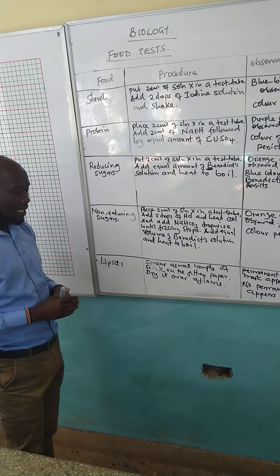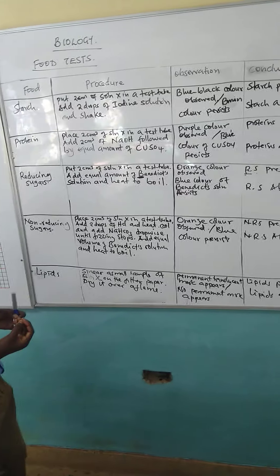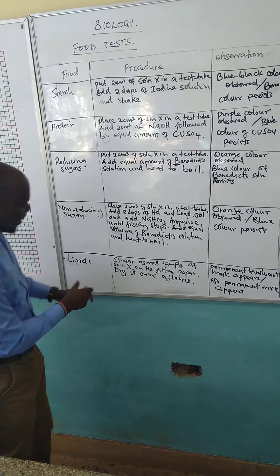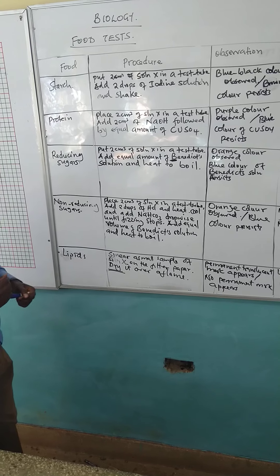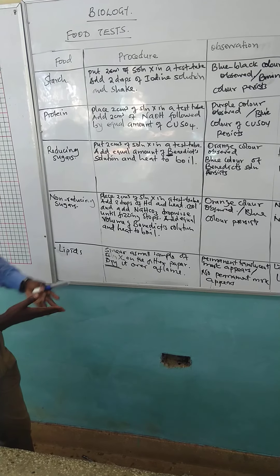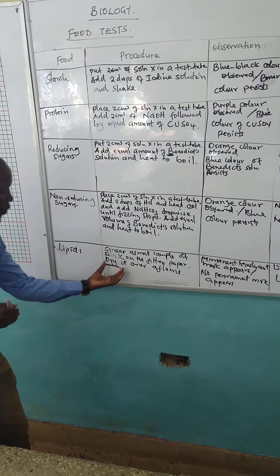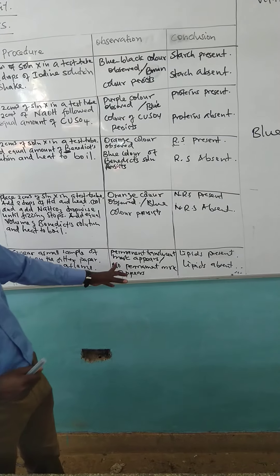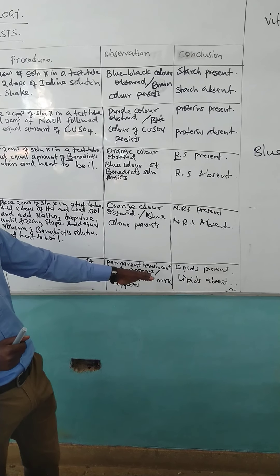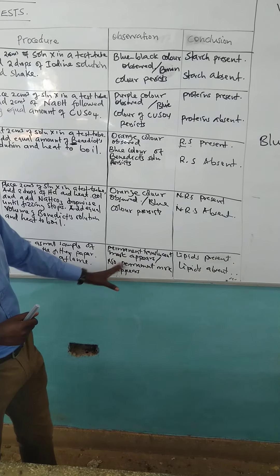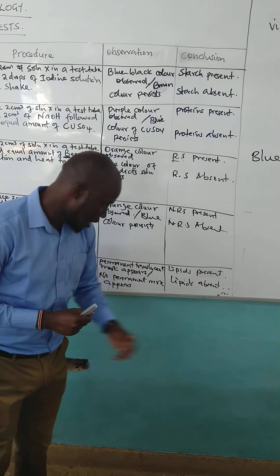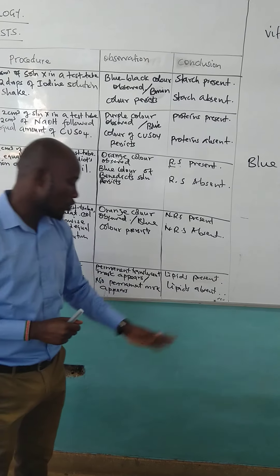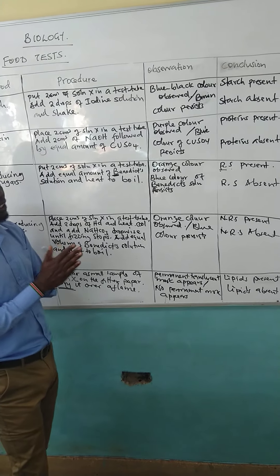When we come to lipids, you will be provided with a filter paper. You are supposed to smear a small sample of solution on the surface of the filter paper. Then dry it over a flame. After drying, if lipids are present, there will be formation of a permanent translucent mark on the surface of the paper — conclude lipids present. But if no permanent translucent mark appears on the surface of the paper, then our conclusion would be lipids absent.